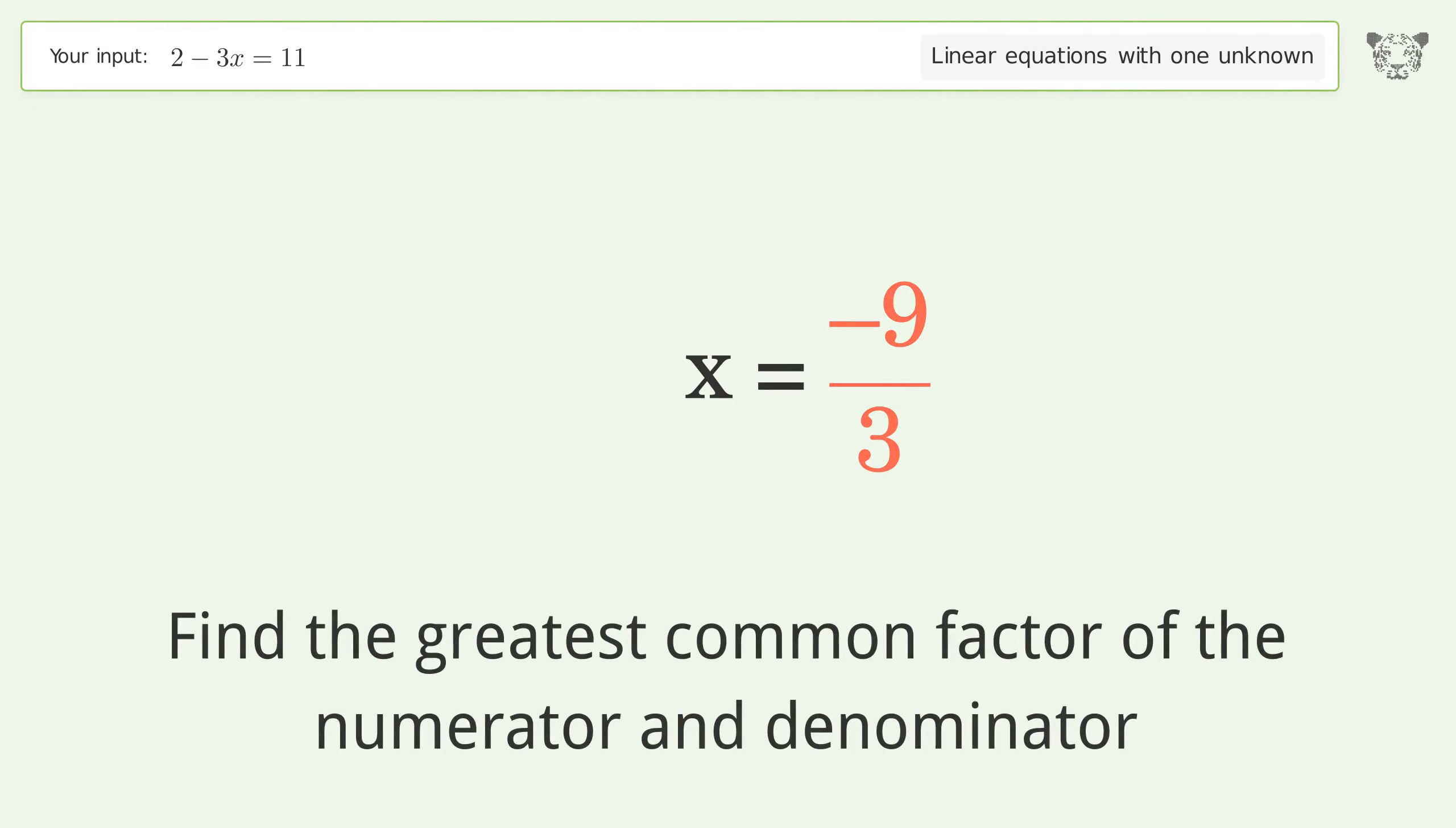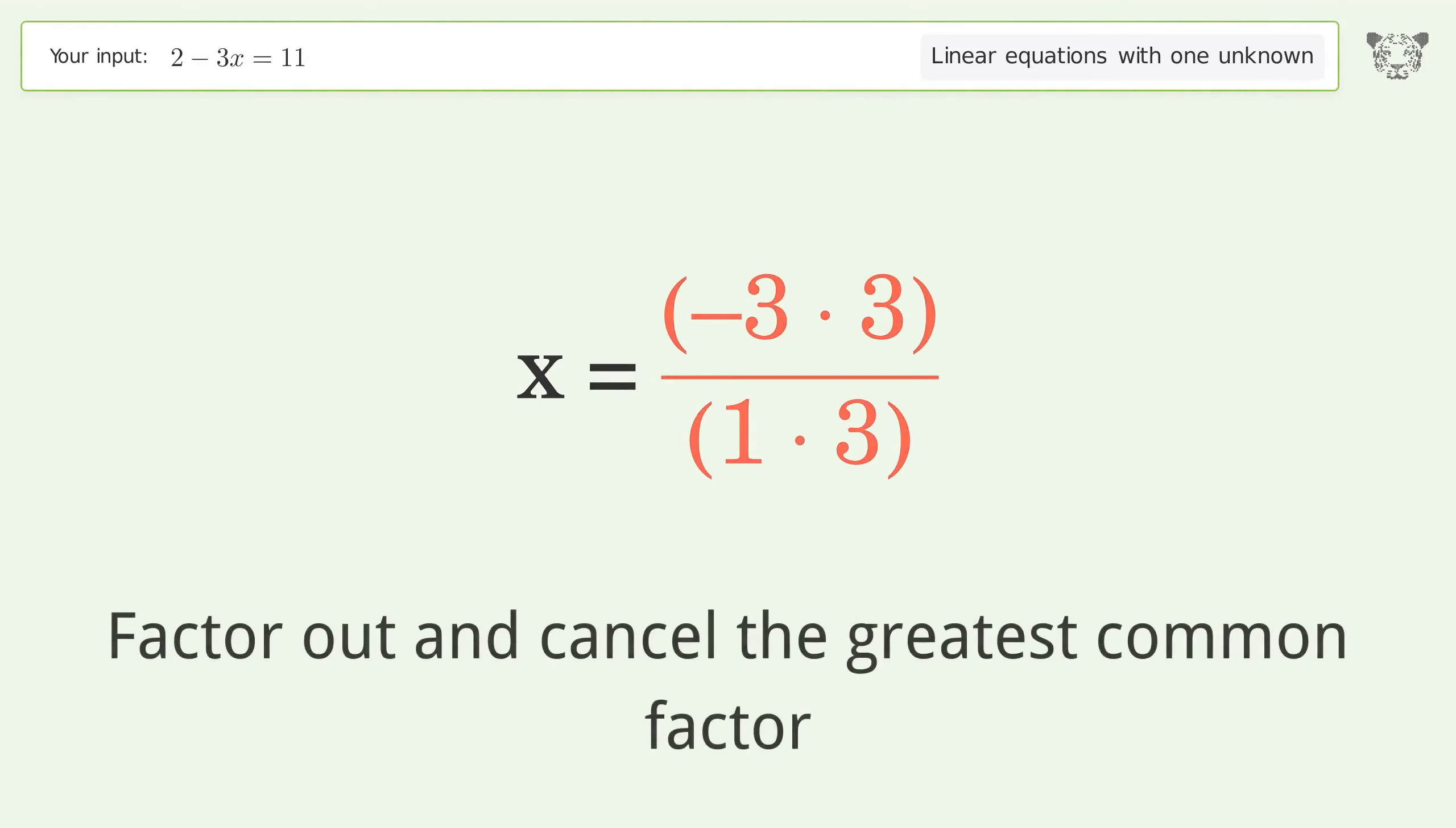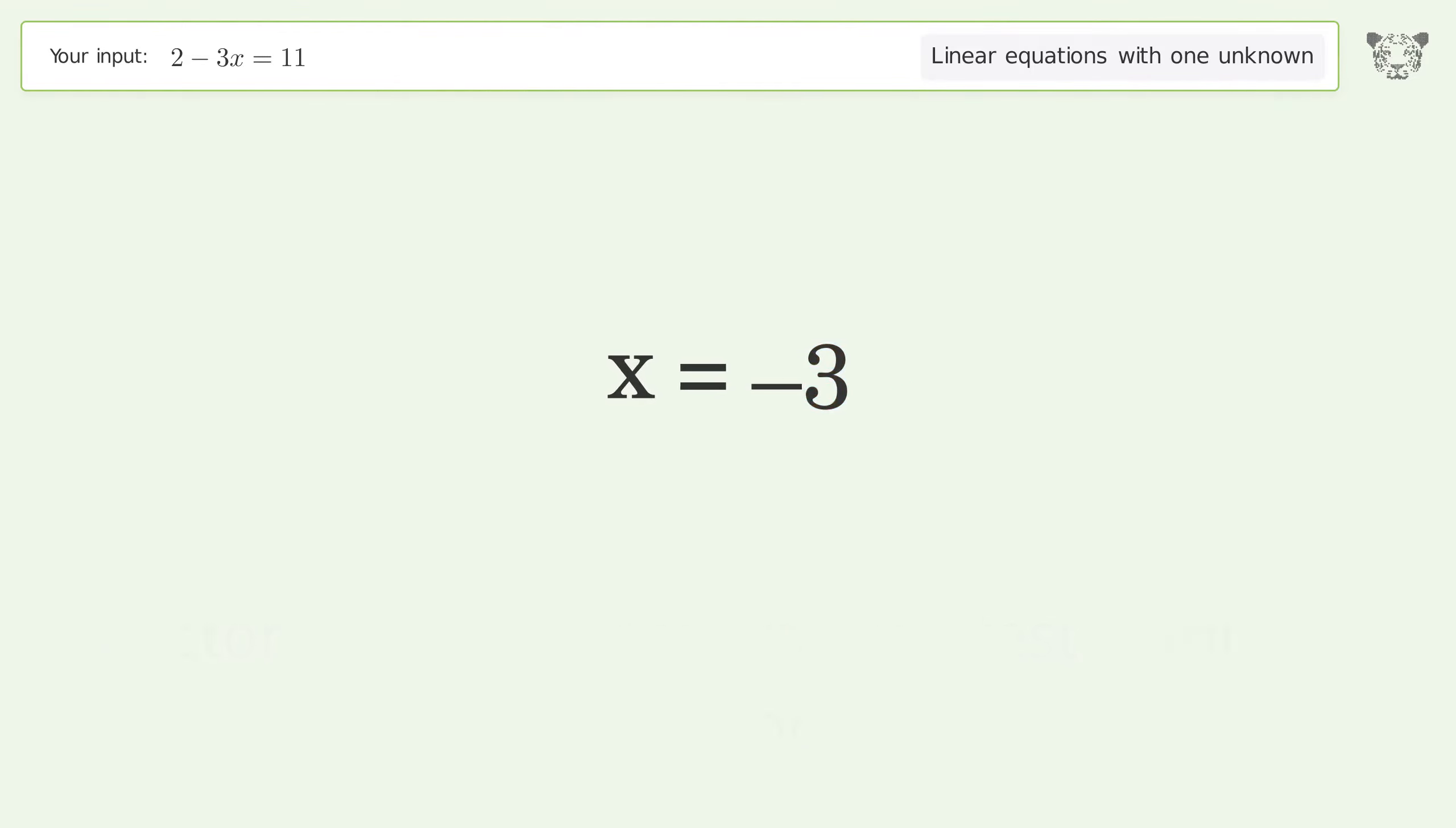Find the greatest common factor of the numerator and denominator. Factor out and cancel the greatest common factor. The final result is x equals negative 3.